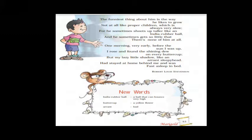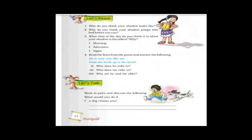Let's discuss a few new words. Indian rubber ball: a ball that can bounce very high. Buttercup: a yellow flower. Arrant: means bad. Sleepyhead: a person who likes to sleep.